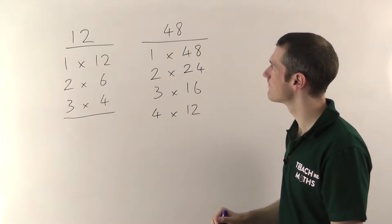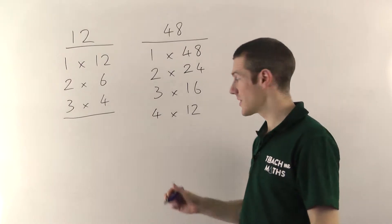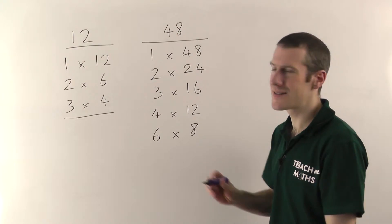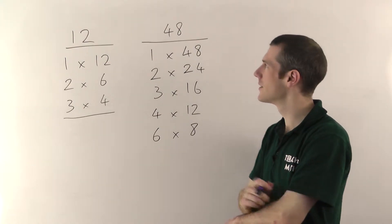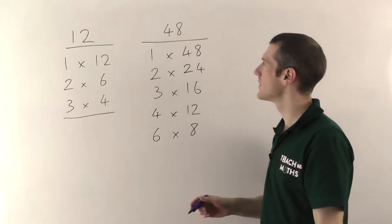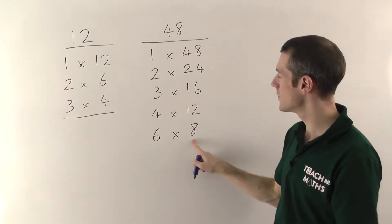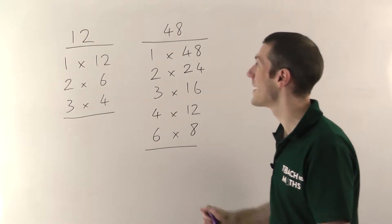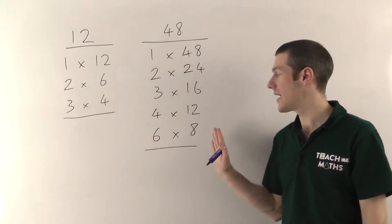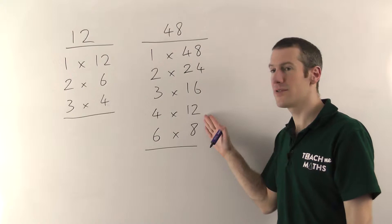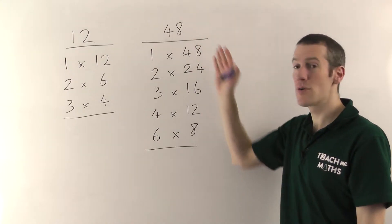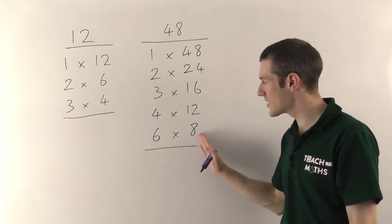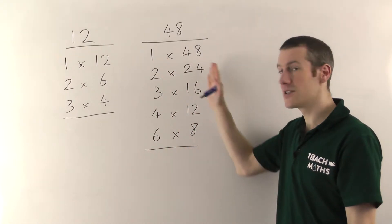Does 6 go in? Yes, 6 8s of 48. 7? Now 7 7s will be 49, so it's not going to go into 48. 8? Well hang on, we've already got an 8 here. So as soon as you're trying something that you've already got, you stop, and that guarantees you've got them all. I don't need to try 9 and 10 and 11 and 13 and 14. I know none of them will go into 48. So as soon as you've got something, as soon as you're trying something you've already got, you stop, and that guarantees you've got them all.